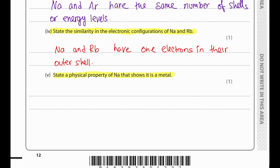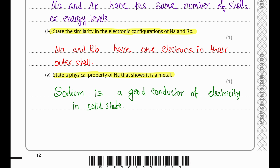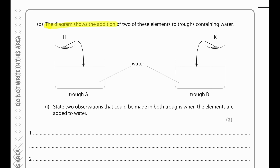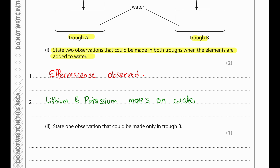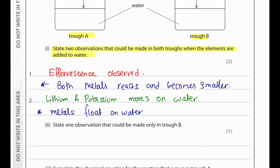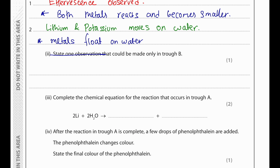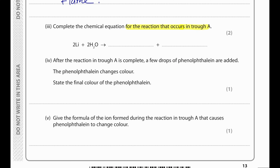A physical property of sodium that shows it is a metal: sodium is a good conductor of electricity in its solid state. Lithium is added to trough A and potassium to trough B. Two observations in both troughs: effervescence, and both metals move around, float, and slowly disappear becoming smaller. One observation only in trough B: potassium catches fire and burns. The phenolphthalein changes to pink because lithium hydroxide is alkaline.